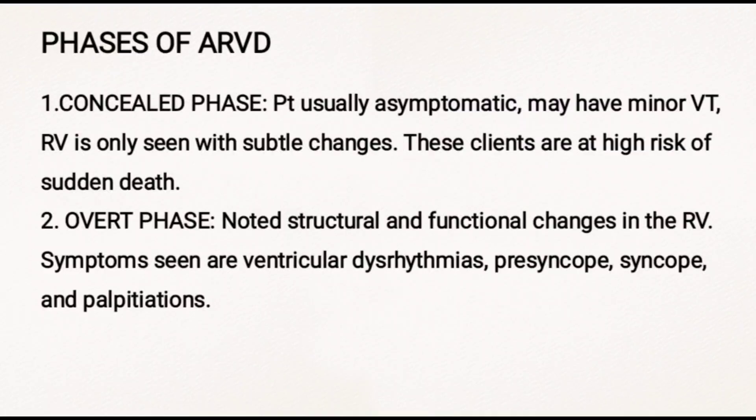There are four phases of ARVD. The first is the concealed phase, where the patient is usually asymptomatic, may have minor VT episodes, and ARVD is only seen with subtle changes. These patients are at a higher risk of sudden death. The second phase is the overt phase, where structural and functional changes are noted in the RV. Symptoms such as ventricular dysarrhythmias, presyncope, syncope, and palpitations are seen.